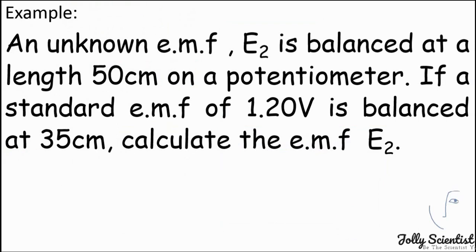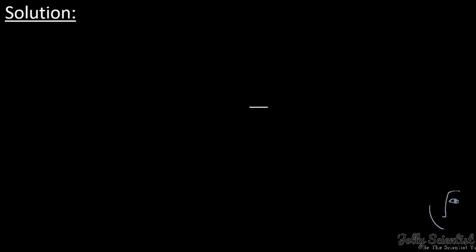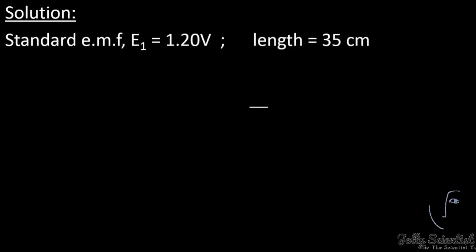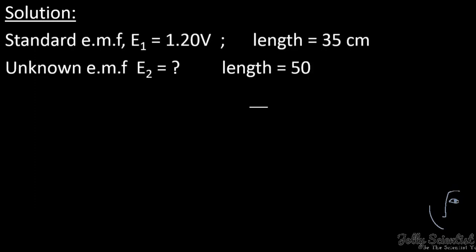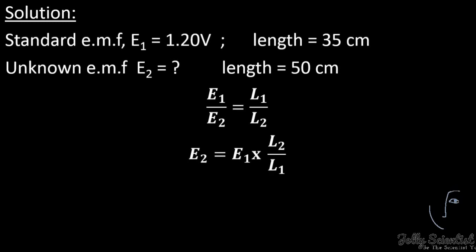Problem: An unknown EMF E2 is balanced at 50 centimeters on a potentiometer. If the standard EMF of 1.20V is balanced at 35 centimeters, calculate E2. Solution: E1 is 1.2V at L1 = 35 cm, and the unknown length is L2 = 50 cm. From E1 divided by E2 equals L1 divided by L2, we get E2 equals 1.20 multiplied by 50 divided by 35, which is 1.71 volts.